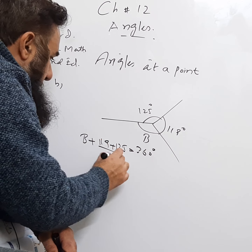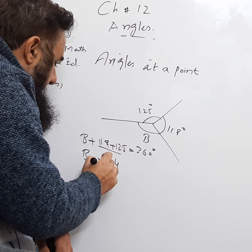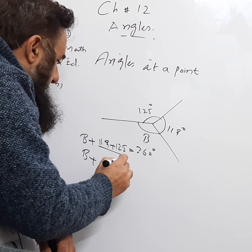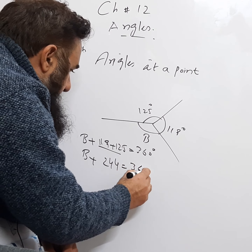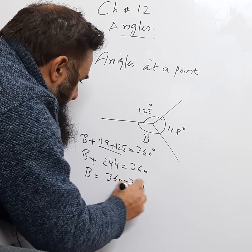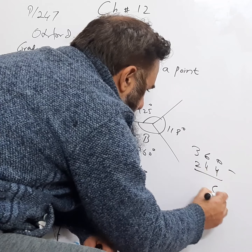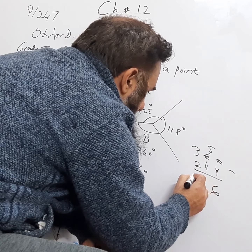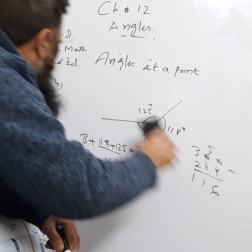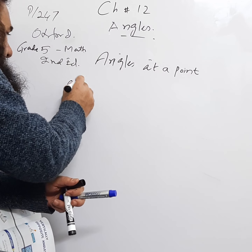So b plus 119 plus 125 equals 360. Adding 119 and 125 gives 244. So b plus 244 equals 360, meaning b equals 360 minus 244, which gives b equals 116.